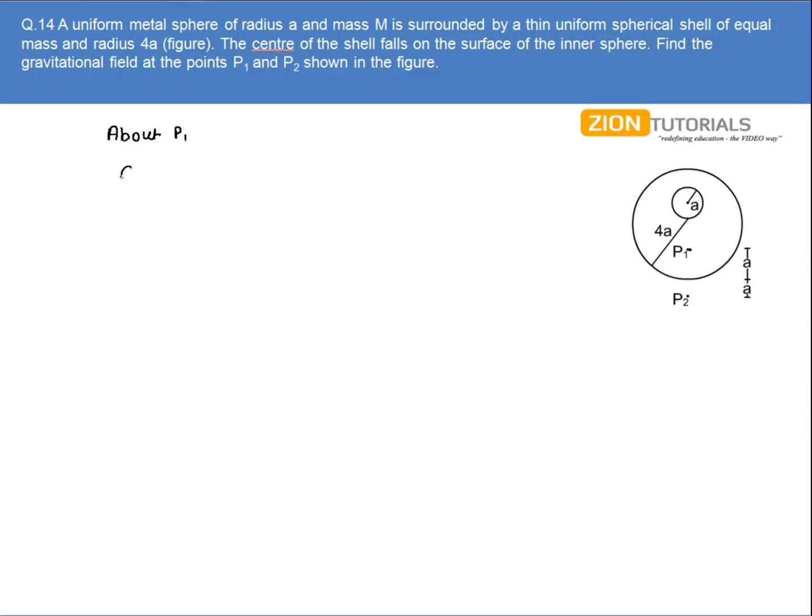So the gravitational field will be given by G times the mass of the solid sphere, that is m, divided by the distance between the center of the metal sphere and point P1 squared. Let's say this distance is x. I will calculate the value of x now.